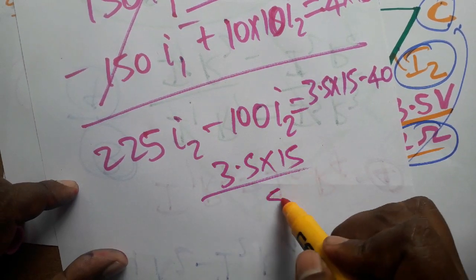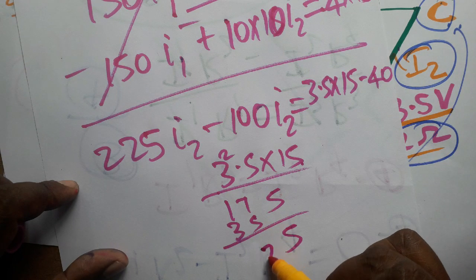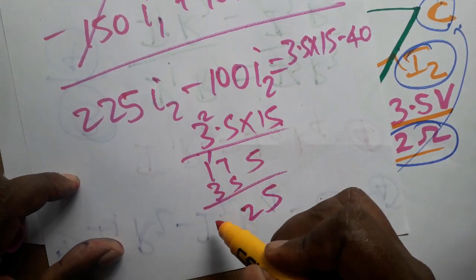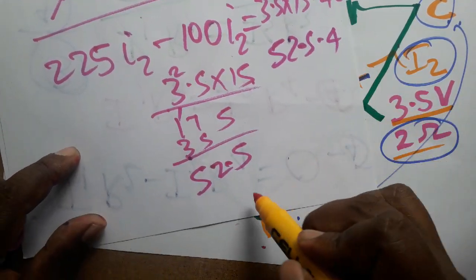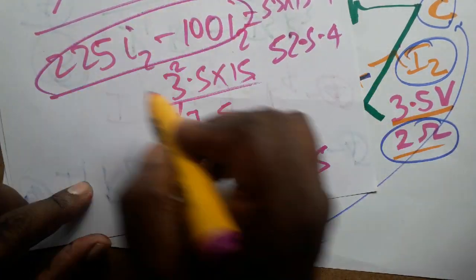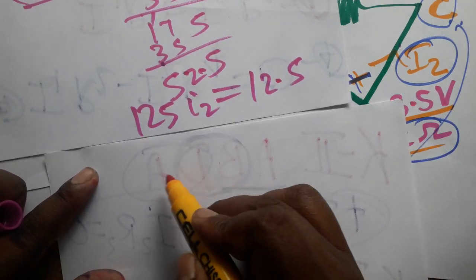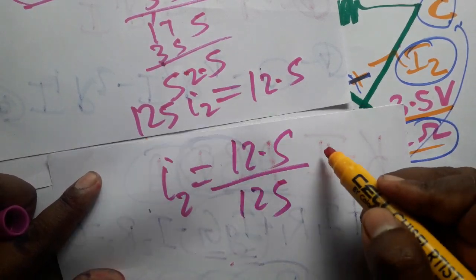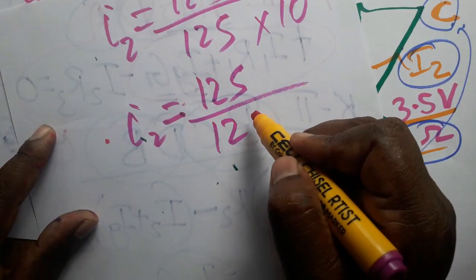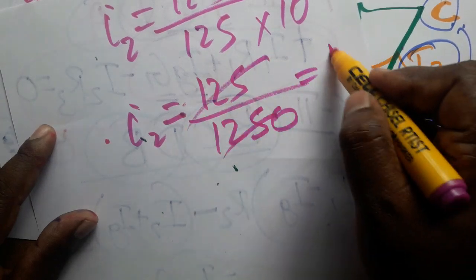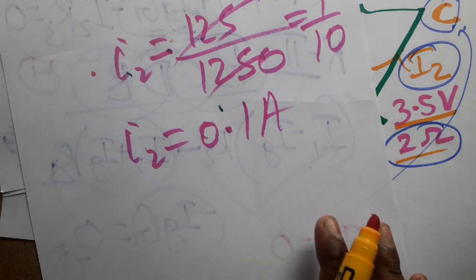From 125·I2 = 12.5, dividing both sides by 125 gives I2 = 12.5 / 125 = 125 / 1250 = 1/10 = 0.1 ampere. So I2 = 0.1 A.